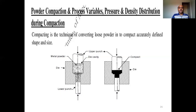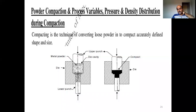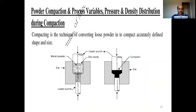Next comes powder compaction and process variables — pressure and density distribution during compaction. Compaction is a technique of converting the loose powder into a compact, accurately defined shape. Looking at the diagram, we have two punches: one is the lower punch at the bottom and we have an upper punch at the top. We also have a die here, and this is called the die cavity.